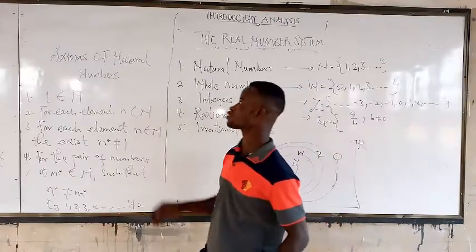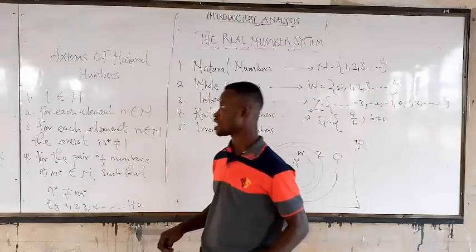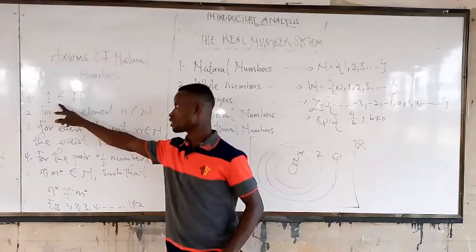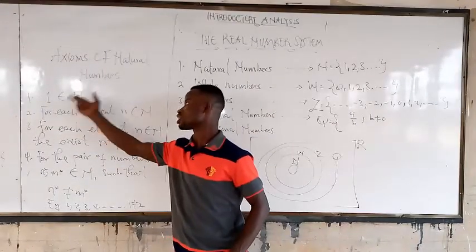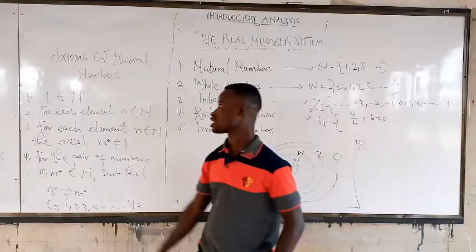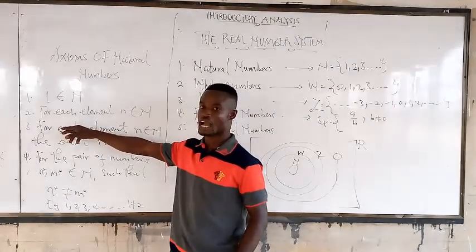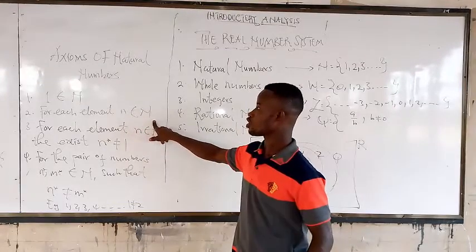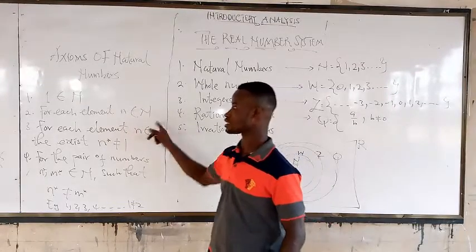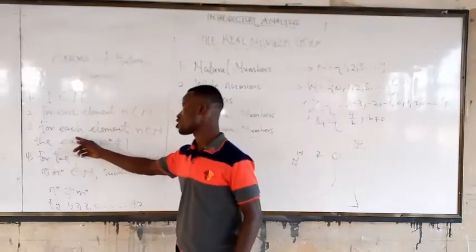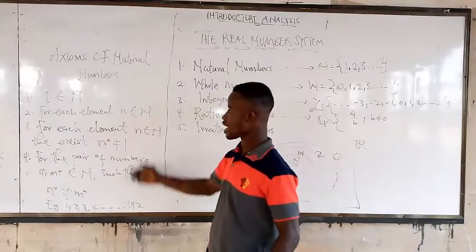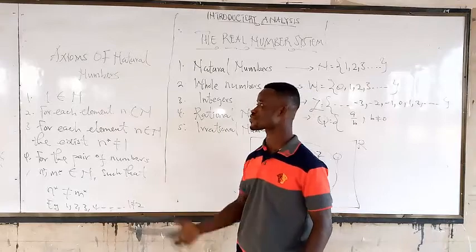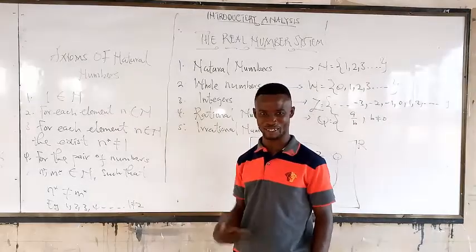Let's look at the axioms of natural numbers. The first axiom states that 1 belongs to the natural numbers. The second axiom is that for each element n belonging to the natural numbers, there exists a successor. The third axiom is also for each element n.